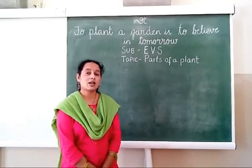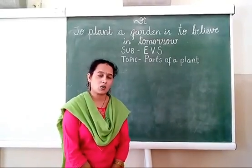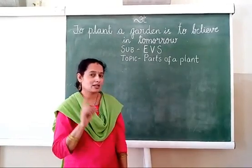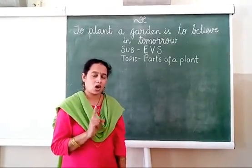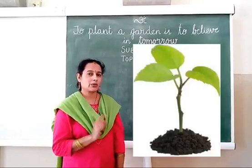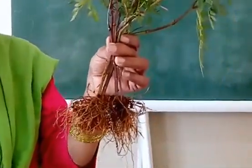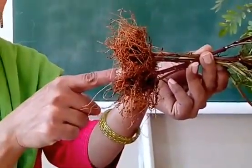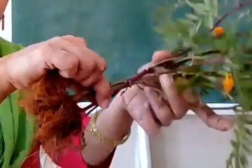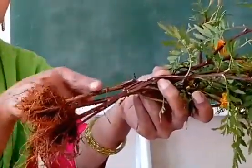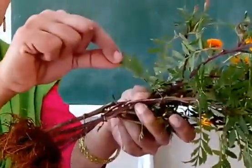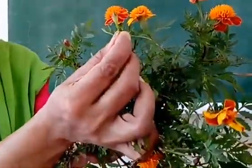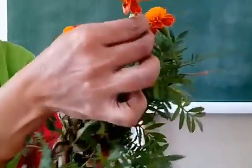In the last class we have seen how the seed grows into a plant. The process is called germination. Now see, the plant has grown. Let us learn the parts of the plant: root, stem, leaf, bud, flower.